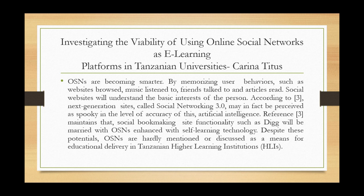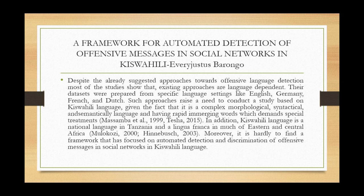Let's move on to the last author. With these examples, I hope you have captured how to write a problem statement. You have to mention the topic briefly, then narrow down to the problem or opportunity within that topic, and then show the deficiency in the body of knowledge. The next author is Mr. Evarajastus Barongo, another assistant lecturer at the College of Informatics and Virtual Education. His research is titled 'A Framework for Automated Detection of Offensive Messages in Social Networks in Kiswahili.'